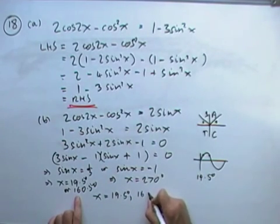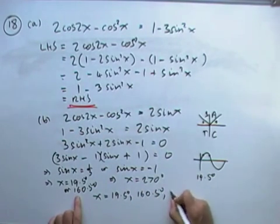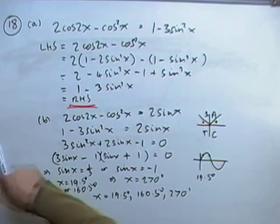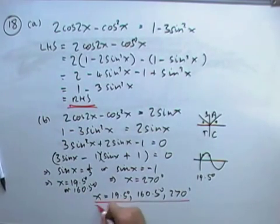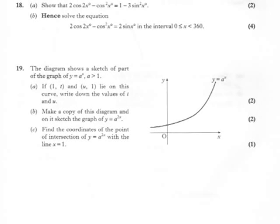So it's 19.5, 160.5 and 270. That was question 18. So now try question 19. Pause and try it.